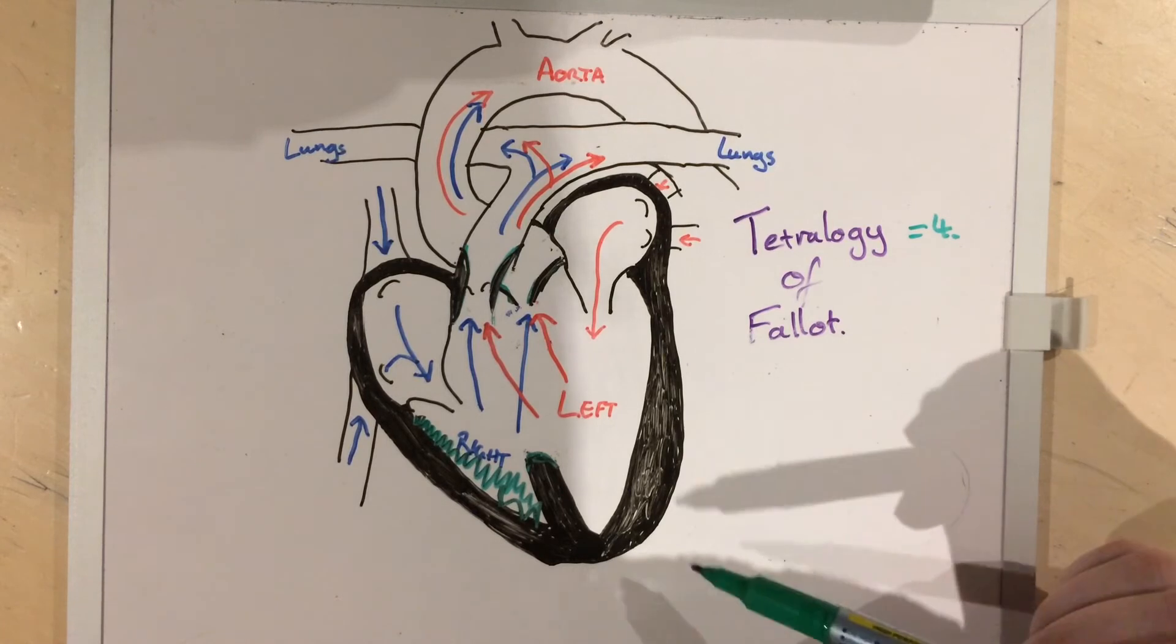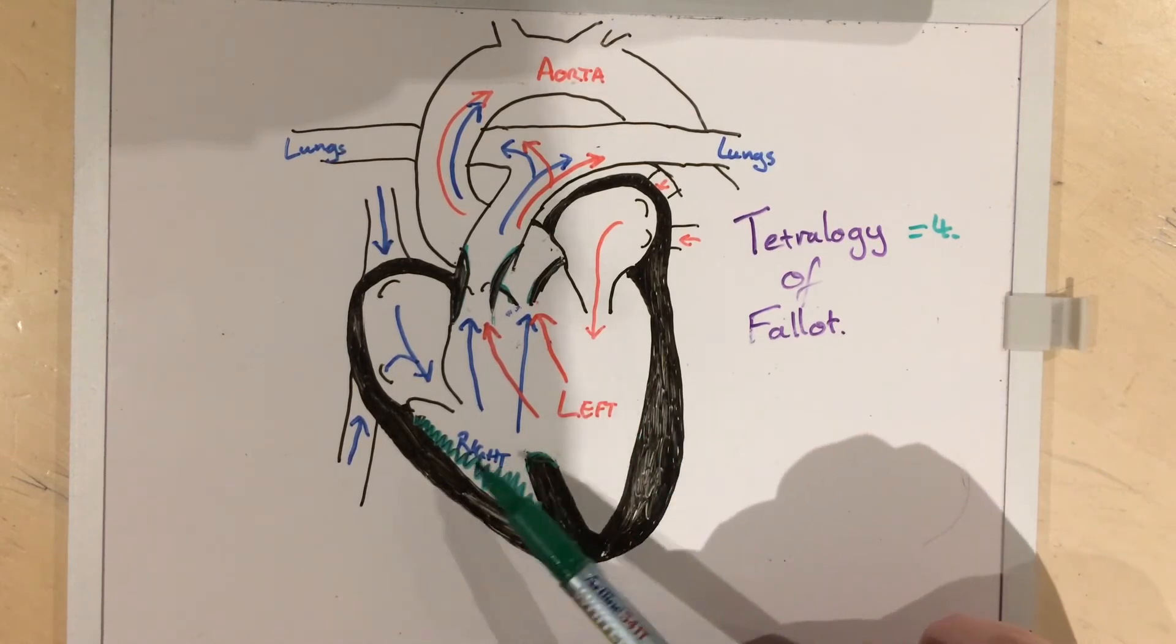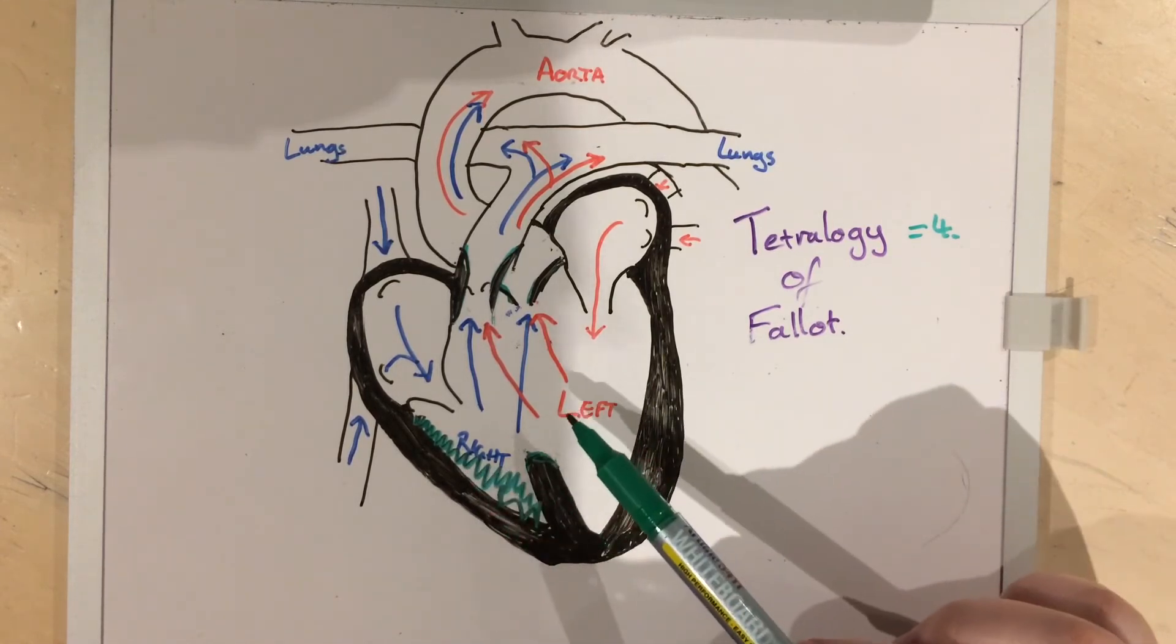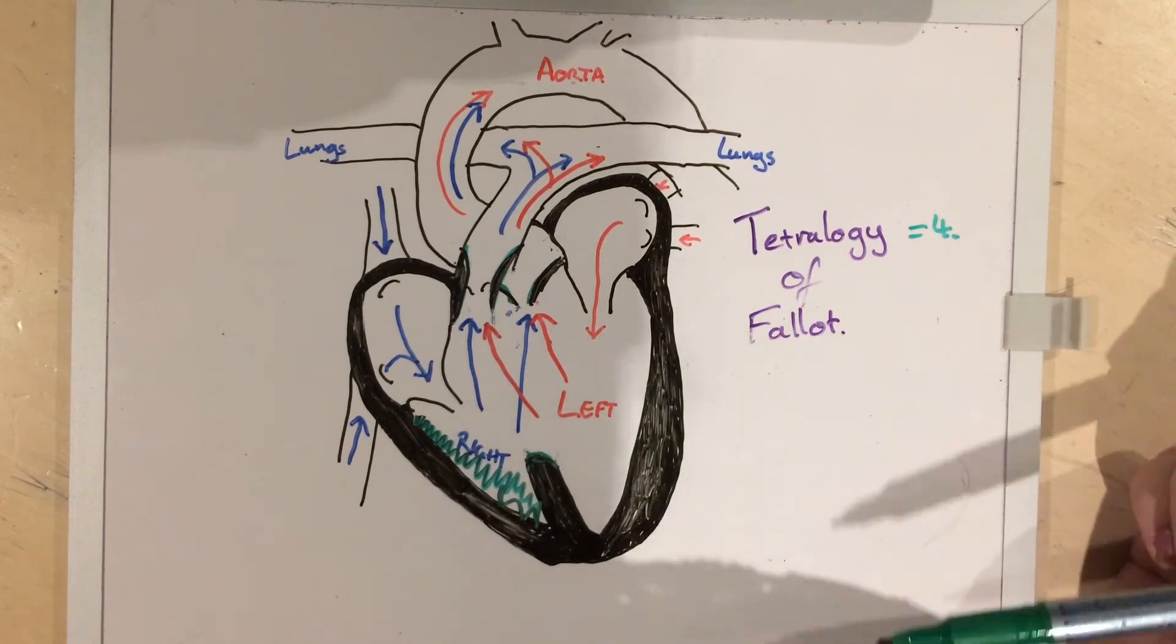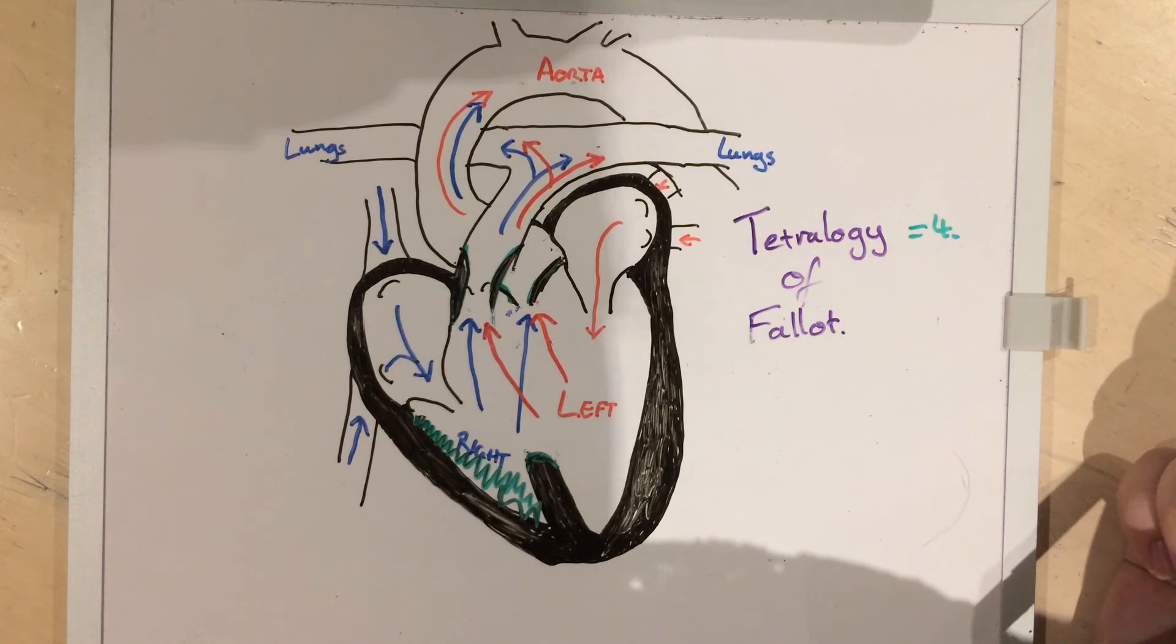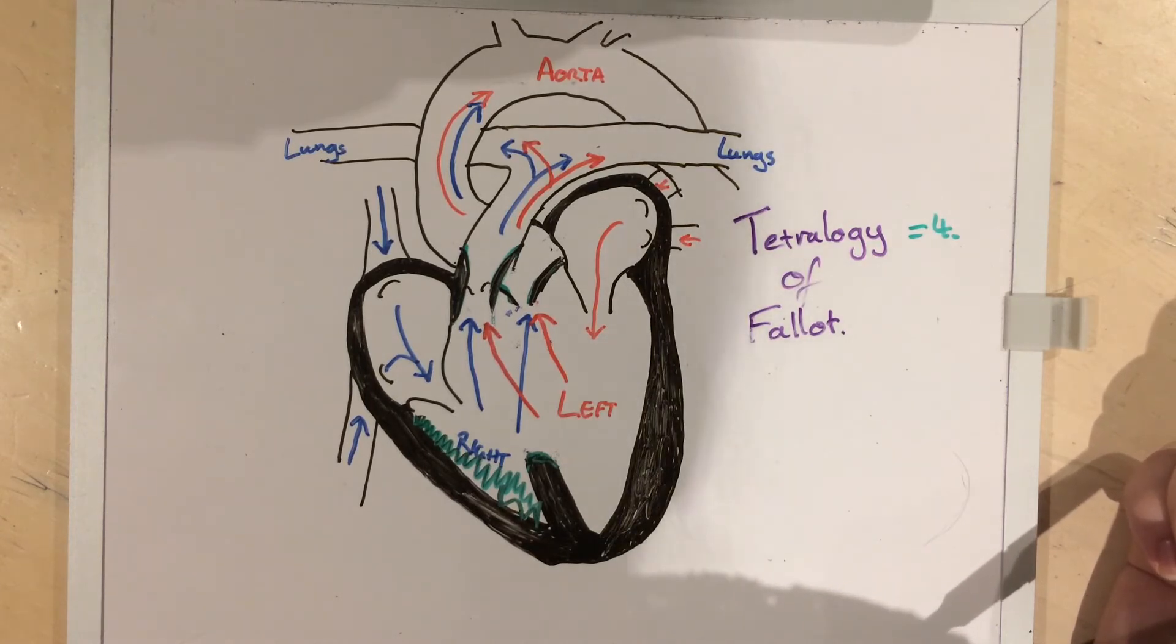So in a tetralogy of Fallot, we have significant mixing of oxygenated and deoxygenated blood, which is going in particular down the aorta. In vet medicine, a lot of these patients do not live terribly long. In human medicine, there's all sorts of surgeries that they pursue, especially in the first year of life. However, even these are not free of complications.